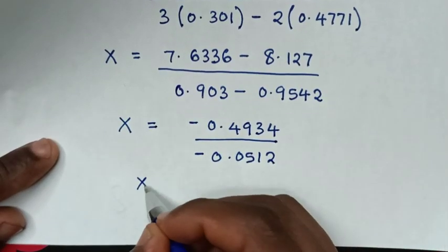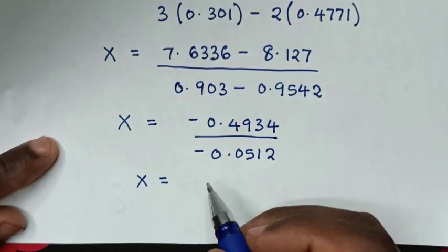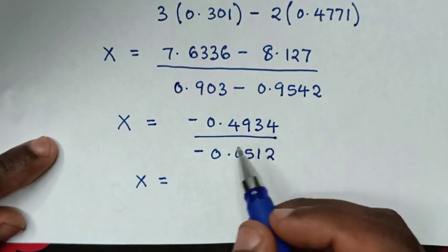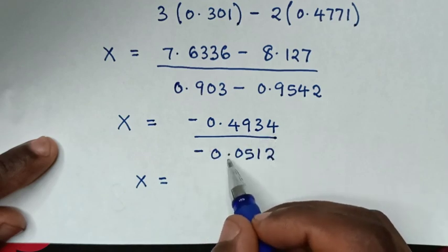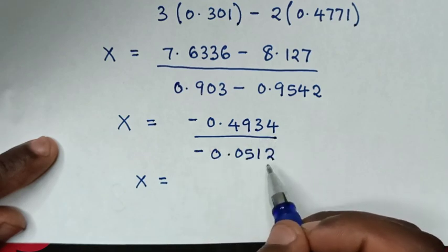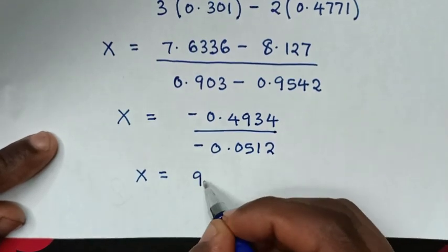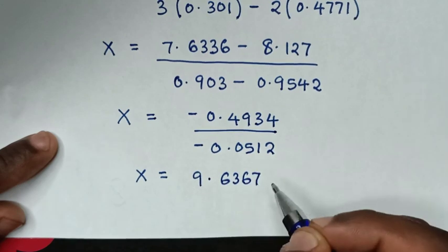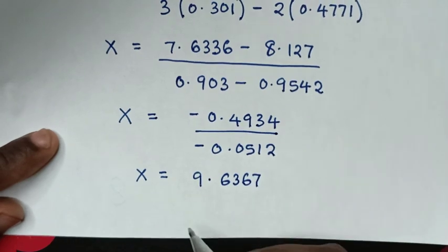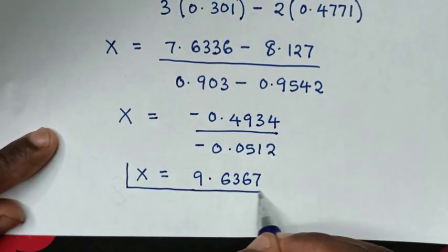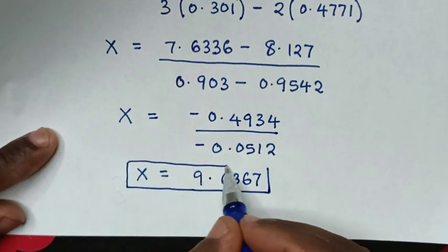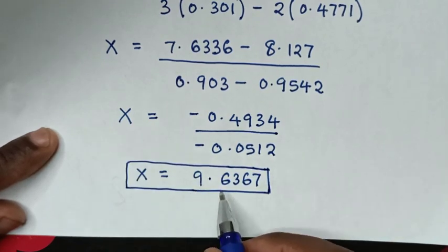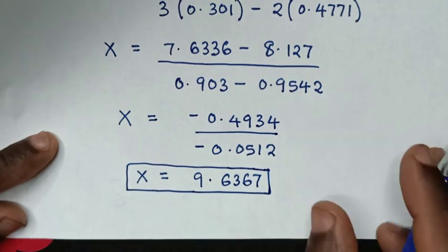Then it will be x is equal to negative 0.4934 over negative 0.0512, which is positive 9.6367. Therefore, this is the final answer for the value of x, which is 9.6367.